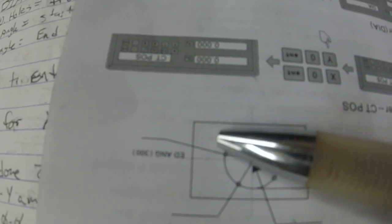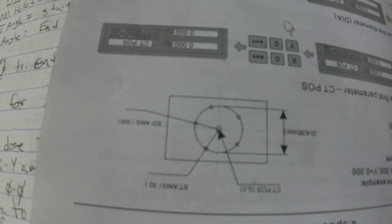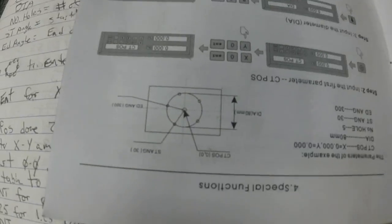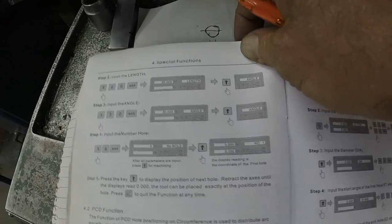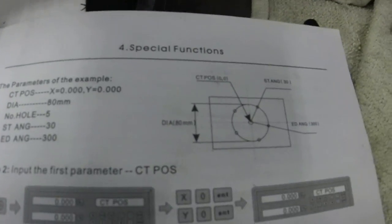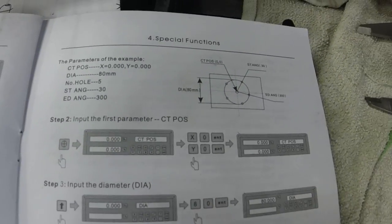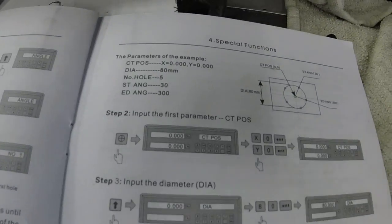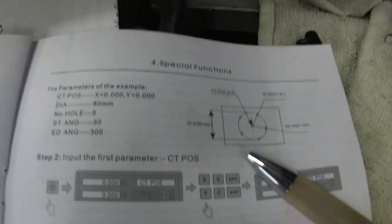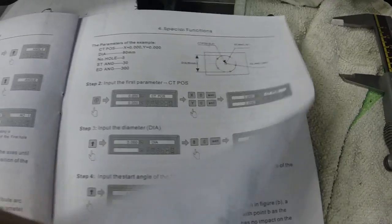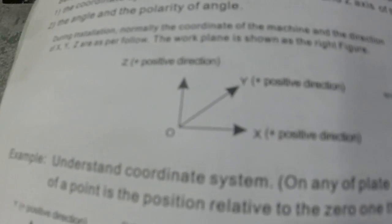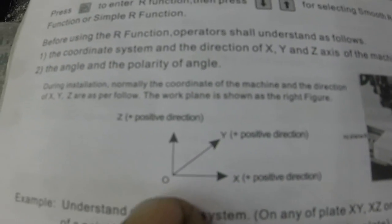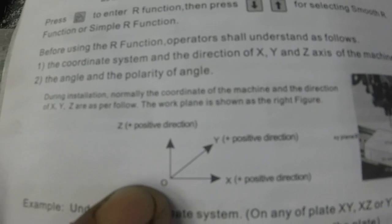It took a couple of hours to figure out, but what's happening is the direction of our axis is backwards compared to the book sample. I've set the machine to its default axis configuration — Z axis positive upward, Y axis positive toward the back, and X axis positive toward the right.